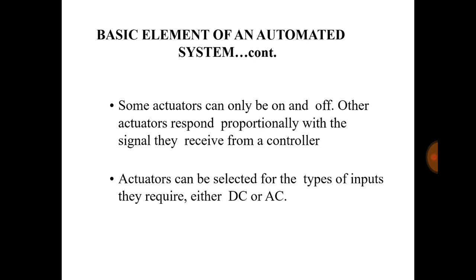Some actuators can only be on and off. Other actuators respond proportionally to the signals they receive from a controller — meaning you can operate them in real time. Actuators can be selected for the type of input they receive, either DC or AC. In a CNC machine, you can use AC motors or DC motors depending on the application, or you can also use a stepper motor or servo motor. It depends on the application.